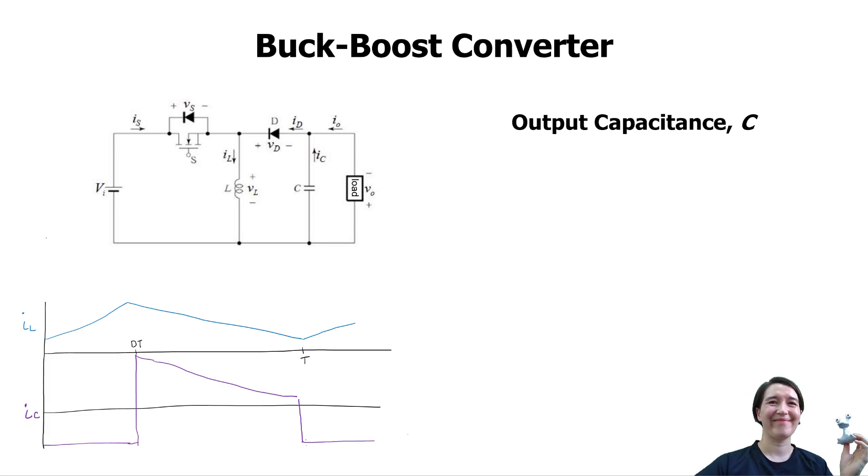We have the waveforms for the inductor current shown here in blue, and it's going up and down like our triangle wave we get for an inductor current. And we have the current through the capacitor.